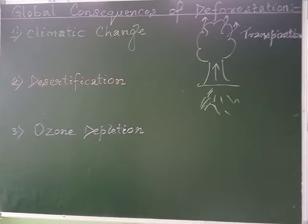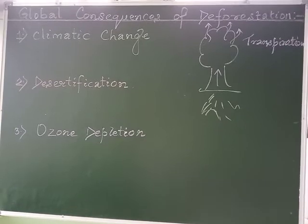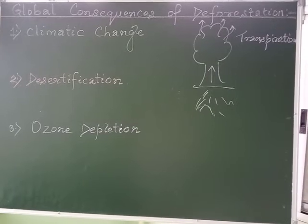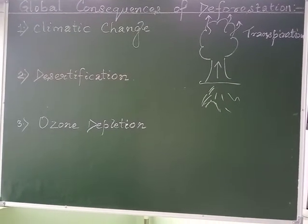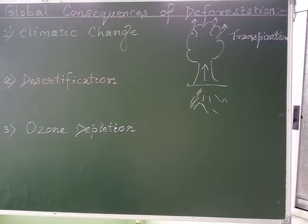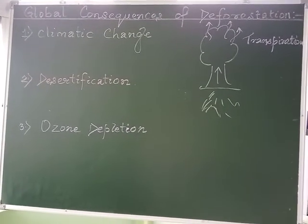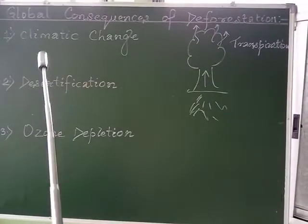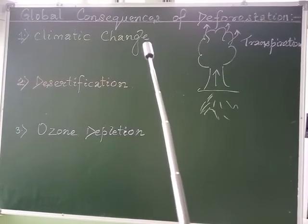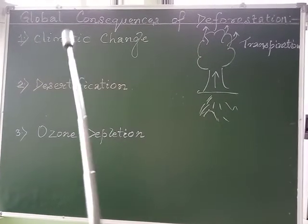We discussed regarding different types of adverse impacts we observe around ourselves, like disruption in the river flow, flooding, drought, plant and wildlife extinction, as well as displacement of forest dwellers and the scarcity of forest products. Today we will discuss about the global consequences of deforestation — what are the bad effects of the practice of deforestation on the global scale.